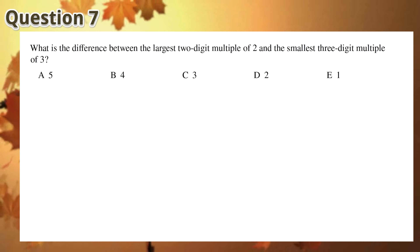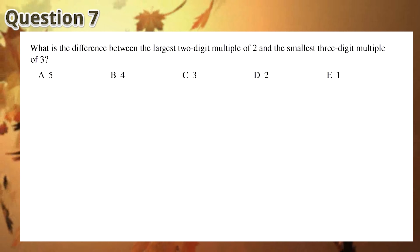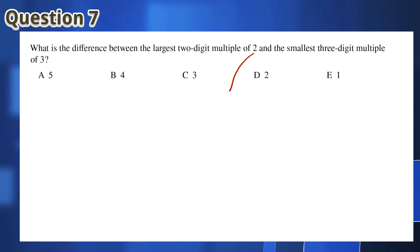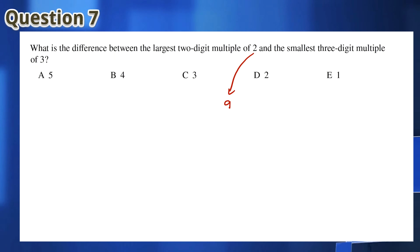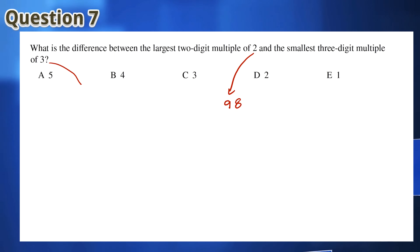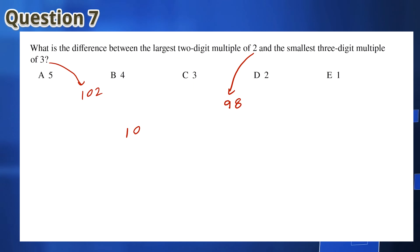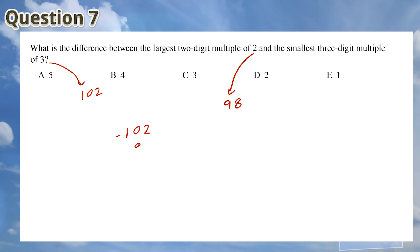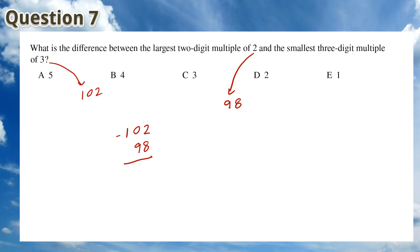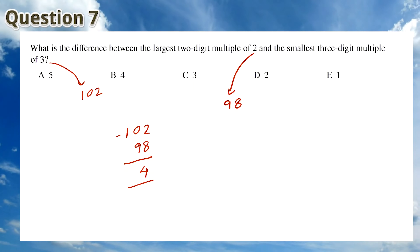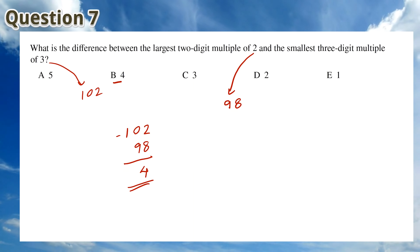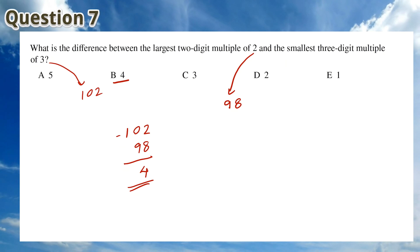For Question 7, the largest 2-digit multiple of 2 is equal to 98 and the smallest 3-digit multiple of 3 is equal to 102. The difference is 102 minus 98, which is equal to 4. This means that the answer is B.